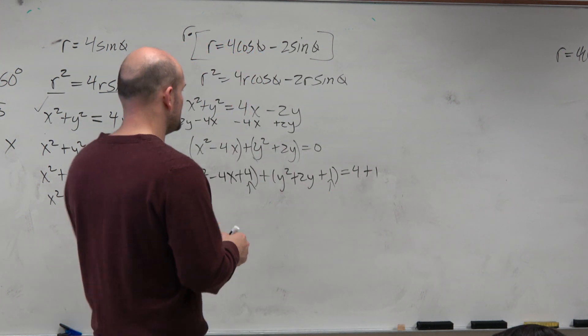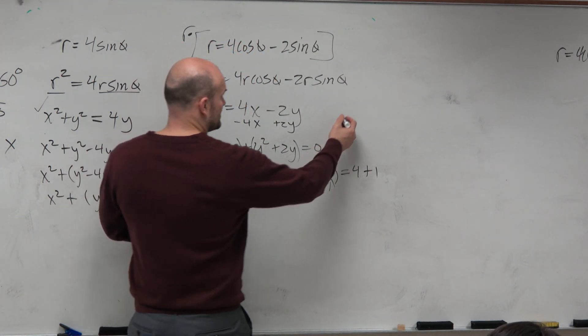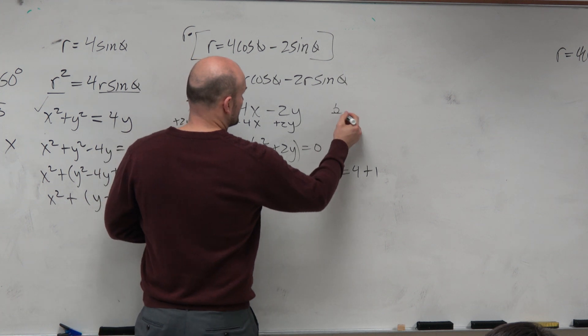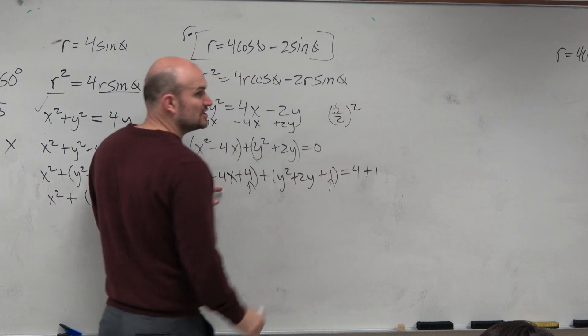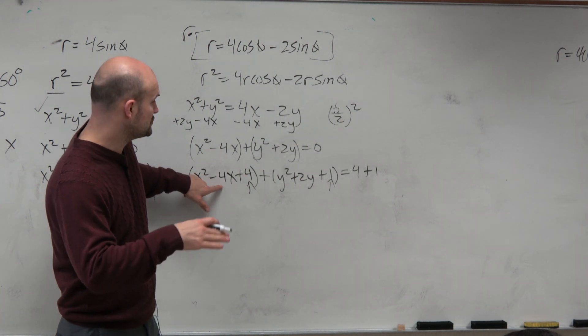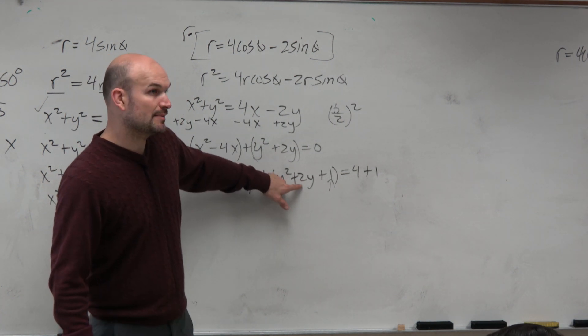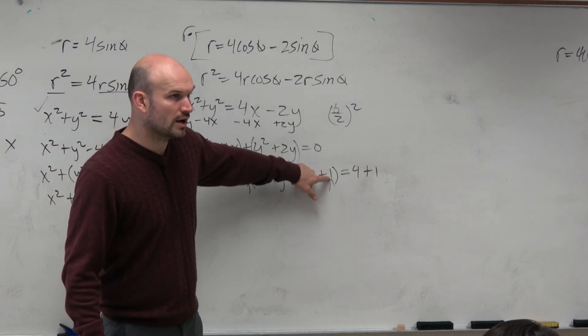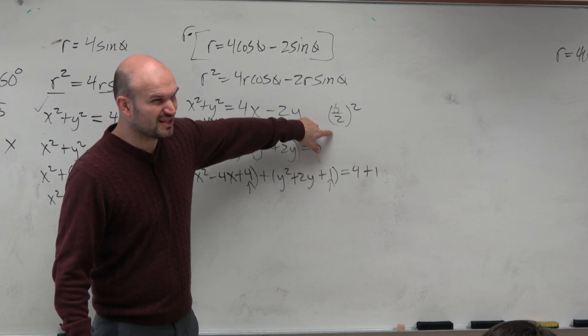There's a way to do this for more complicated answers. If you remember, it's b divided by 2 squared. That's what we taught in chapter 2. Negative 4 divided by 2 is negative 2. Negative 2 squared is 4. 2 divided by 2 is 1. 1 squared is 1.